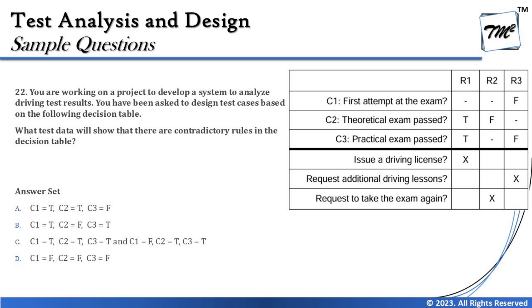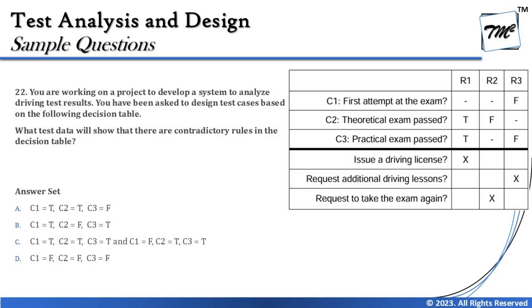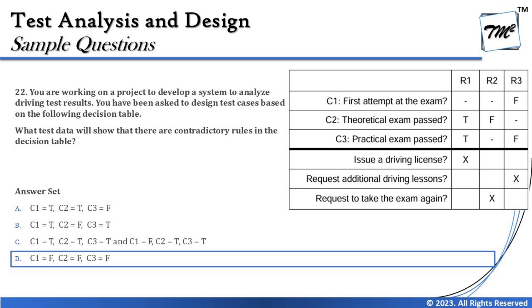Option D says F, F, F — False, False, False. This combination can fit into both R2 and R3. That looks contradicting: False, False, False perfectly fits both R2 and R3, but the actions are different — for R2 the action is 'request to take the exam again,' and for R3 it is 'request additional driving lessons.' So R2 and R3 have the same input combination but different outputs, showing a contradiction. The right answer is D.